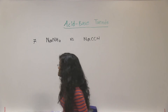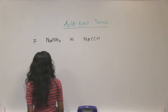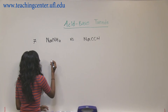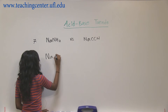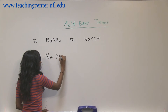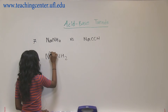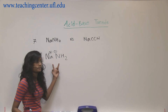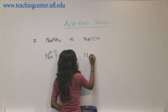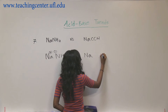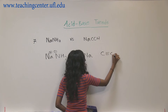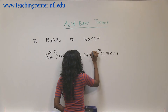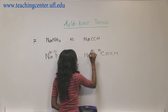The next ones are NaNH2 and NaCCH. For NaNH2, there is nothing else to draw, but we can differentiate the charges — plus and minus. It's an ionic compound. Same thing here, where CCH is drawn out, and Na is plus.